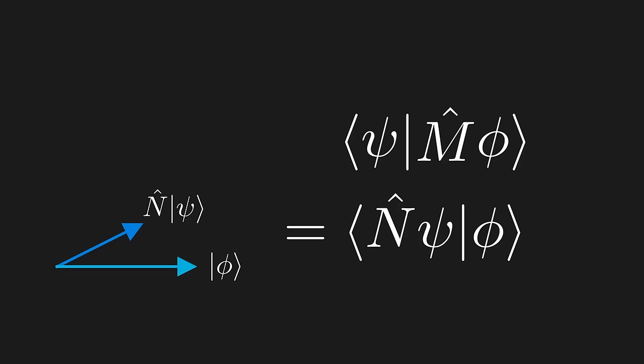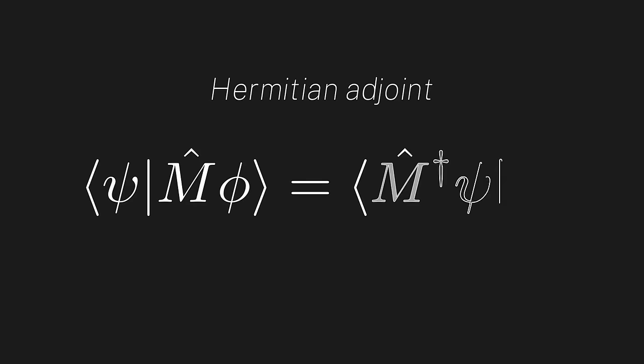And this must be true for any two vectors, phi and psi, that we choose. It turns out there is such an operator. This operator is called the Hermitian adjoint. We designate the Hermitian adjoint by taking our operator and adding a dagger in front of it. The fundamental property of the Hermitian adjoint is that it satisfies the following property for any vector, phi and psi.